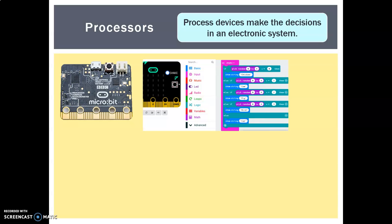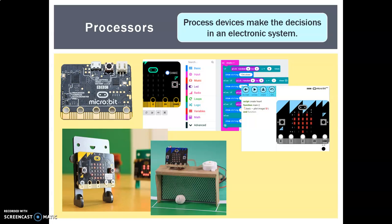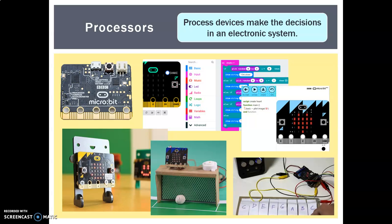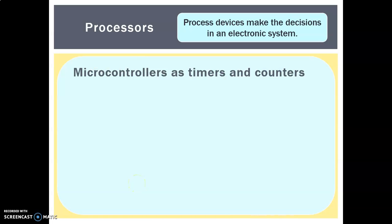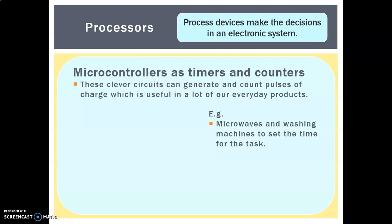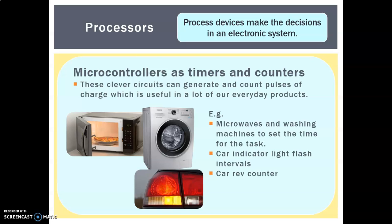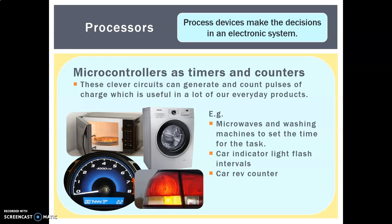Because they're programmable and designed to be accessible for children and young people, the micro:bit for example has a light-up panel. People have made little characters, smiley faces, goal indicators, and even played music with them. Microcontrollers can also be used as timers and counters — clever circuits that generate and count pulses of charge. This is useful in microwaves and washing machines for setting time, in car indicator lights to control the interval at which they flash, and in car rev counters measuring revolutions per minute and feeding that information to the dashboard.